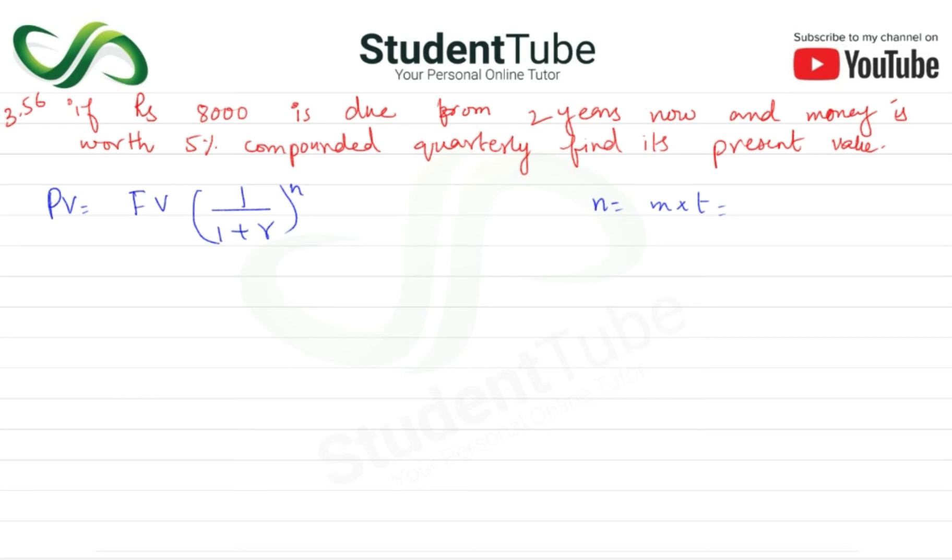That means kya? 4. T two years, so hoga 8. Phir r kya hai? Humara hai i upon m. I kya hota hai? Rate jo ki hai 0.05. M kya hota hai? Jitne compound hua ho, yani ke 4.